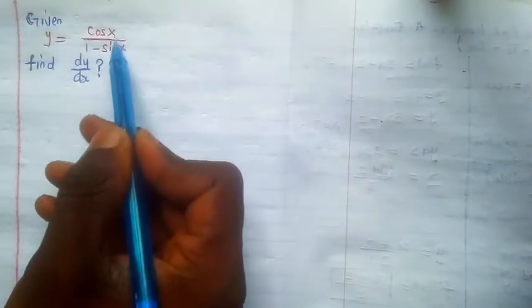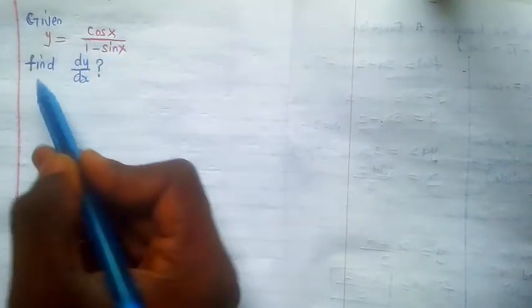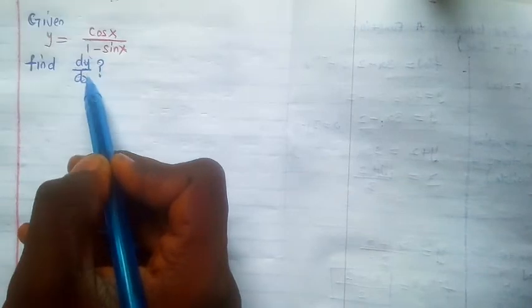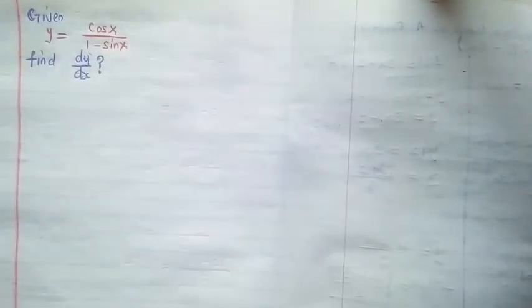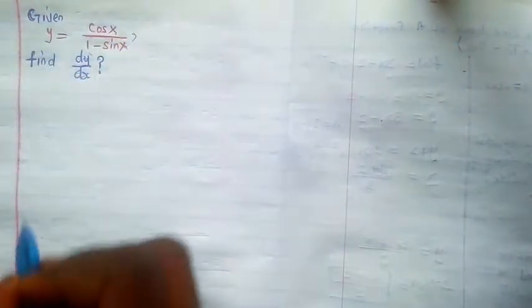Given that y equals cosec x over 1 minus sine x, find the derivative of y with respect to x. To find this derivative, I will be using the quotient rule because this is a fraction.